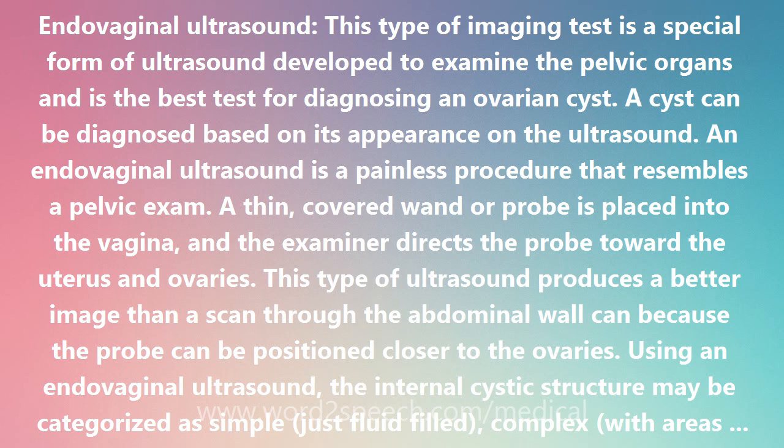Using an endovaginal ultrasound, the internal cystic structure may be categorized as simple — just fluid-filled — complex, with areas of fluid mixed with solid material, or completely solid, with no obvious fluid.